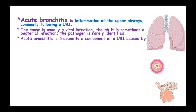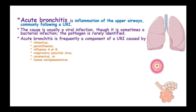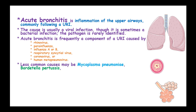Acute bronchitis is frequently a component of an upper respiratory tract infection caused by rhinovirus, parainfluenza, influenza A or B, respiratory syncytial virus, coronavirus, or human metapneumovirus. Less common causes may be Mycoplasma pneumoniae, Bordetella pertussis, and Chlamydia pneumoniae.